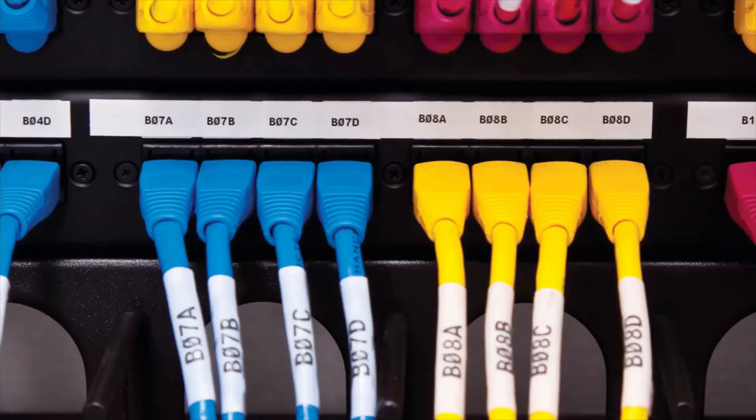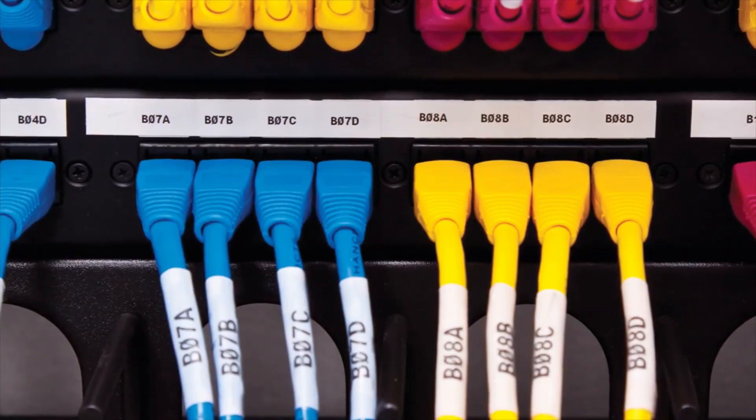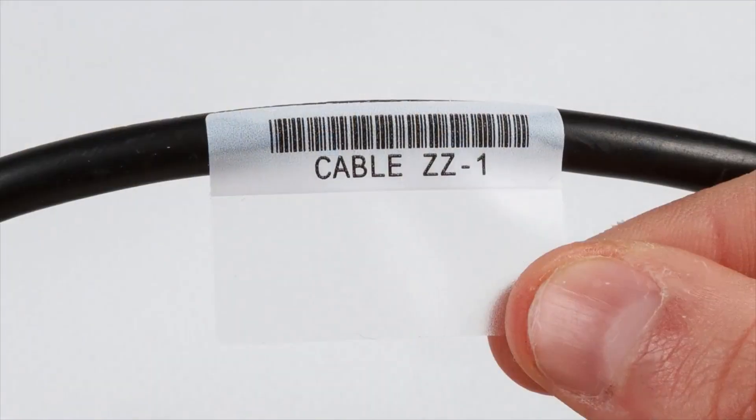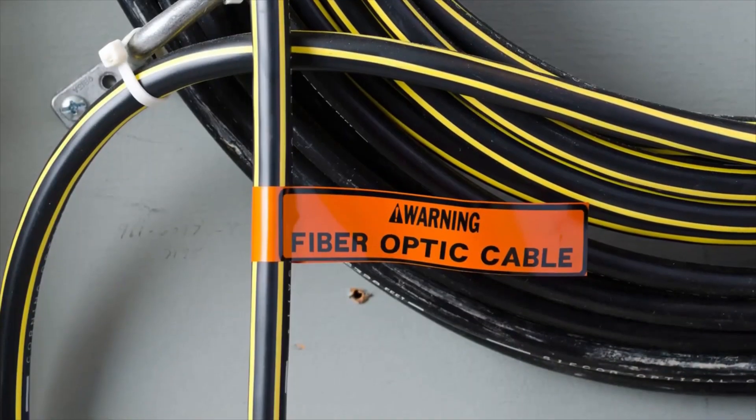In electrical, voice, and datacom environments, BBP12 can print wire markers, cable sleeves, self-laminating labels, flag labels, and cable tags.